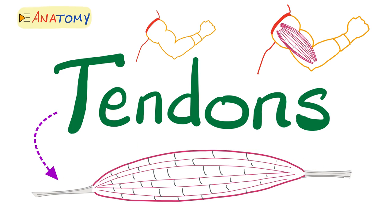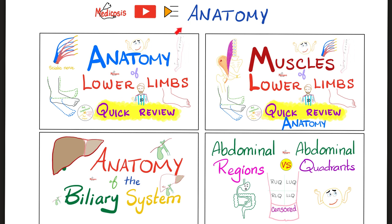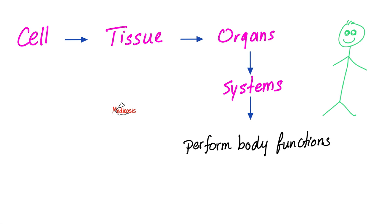What are these tendons made of? Collagen. Let's get started. This is part of my anatomy playlist. As you know, your body is made of systems. Each system has organs, each organ has tissue, each tissue has cells. The cell is the building unit of your body.